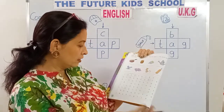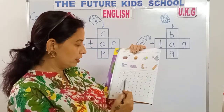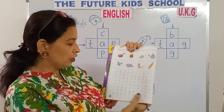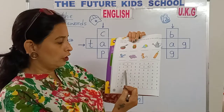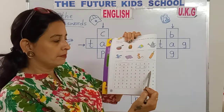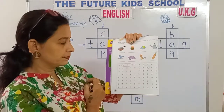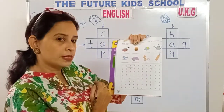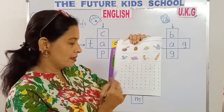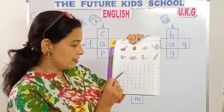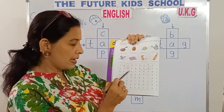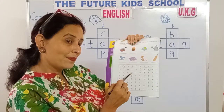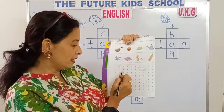Now look in the third line, children, if you can find the word cap. Look properly. Look in this puzzle at the letters. Yes, here it is. C-A-P. Cap. Circle it.